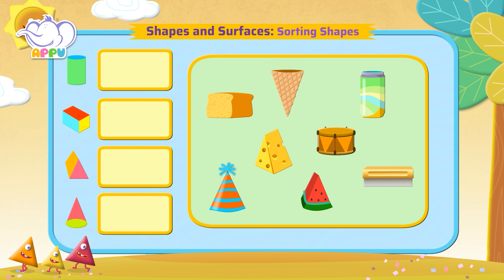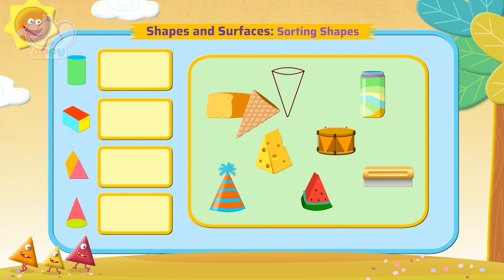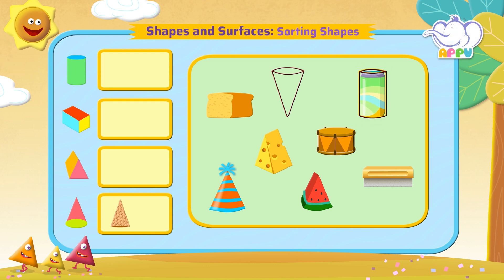This is an ice cream cone and its shape looks like a cone. Let's place it here. This is a soft drink can. It looks like a cylinder. Let's place it here.